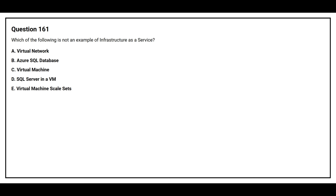Section number 161. Which of the following is not an example of Infrastructure as a Service? Option A: Virtual Network. Option B: Azure SQL Database.